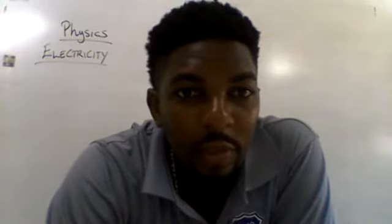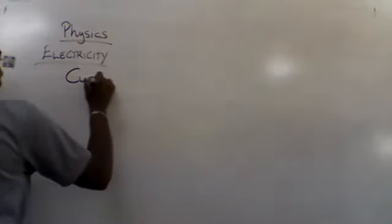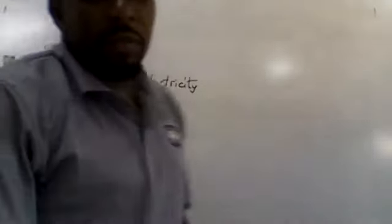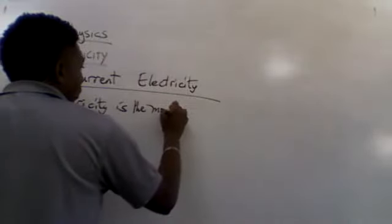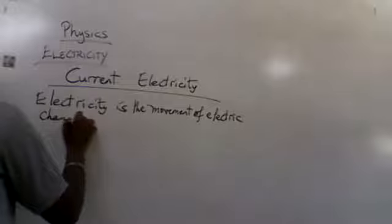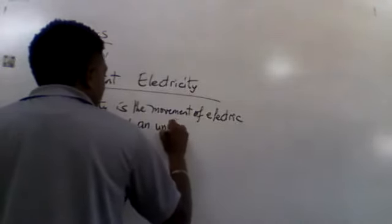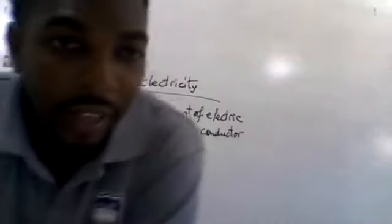Welcome back. Today we're going to be looking at electric currents, meaning we're going to be looking at current electricity. Electricity is the movement of electric charges — specifically, the movement of electric charges around an unbroken conductor.